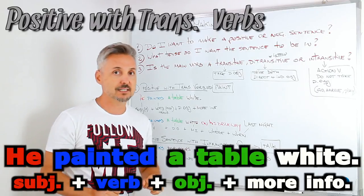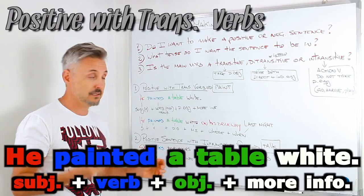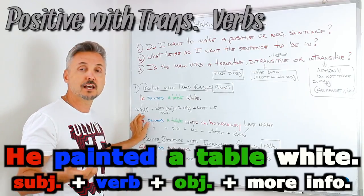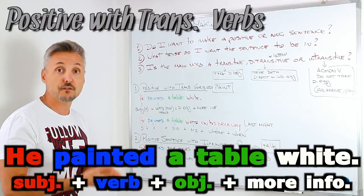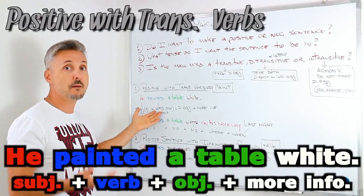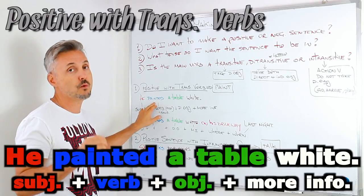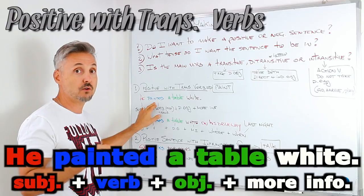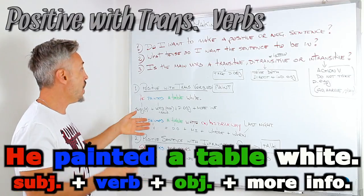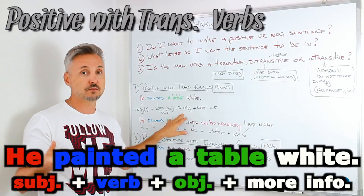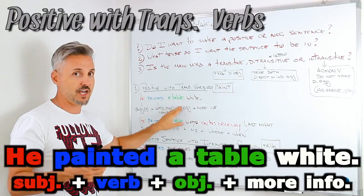Let's analyze the sentence. The first thing we need to write in English in a simple sentence is the subject — in this case it's a pronoun, a personal pronoun: he. Then we have the verb. It's a regular past tense verb: paint, so we add -ed to make it into a regular past — painted. As we said, it's a transitive verb because it takes an object. The object in this case is a table, the direct object.